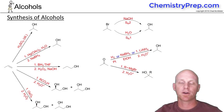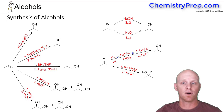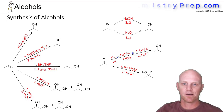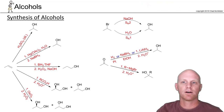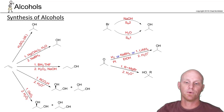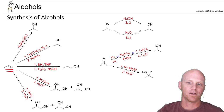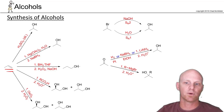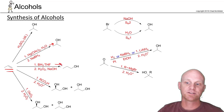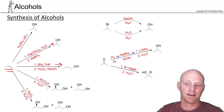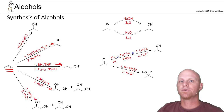We'll spend the rest of the chapter talking about how to make alcohols and then how to use them. Starting with synthesis, most of the ways of making an alcohol are review. There's a whole host of alkene addition reactions: dilute H₂SO₄ adds H and OH Markovnikov, so does oxymercuration-demercuration. Hydroboration oxidation adds H and OH anti-Markovnikov. We've also got both syn and anti-dihydroxylation to make diols. But those are all review reactions from the alkene chapter, so I won't cover them again.